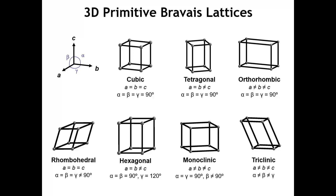In three dimensions, there are a total of seven primitive Bravais lattices, and those lattices are shown here. Remember from last time, a primitive Bravais lattice is one where we have a lattice point only at the vertices or corners of the unit cell. In three dimensions, the unit cell is an object called a parallelopiped — a six-sided figure where each face is a parallelogram of some sort.